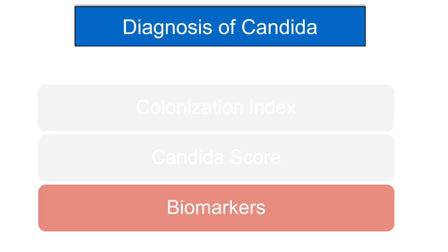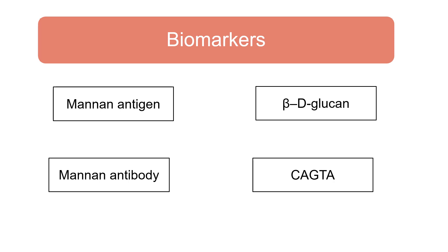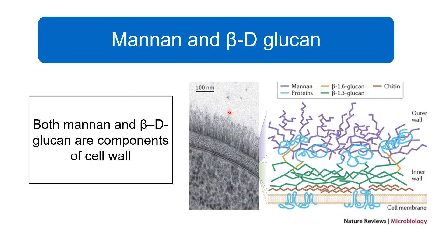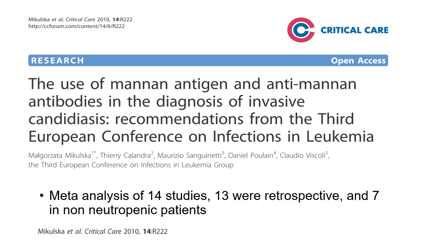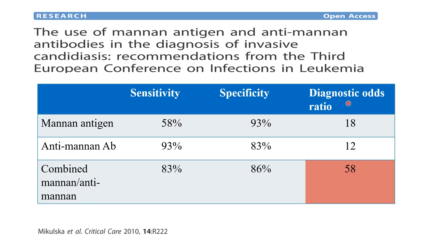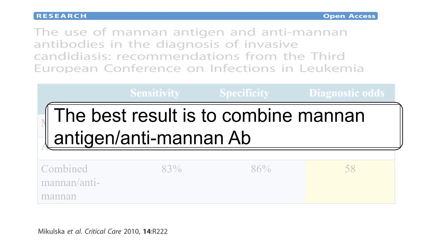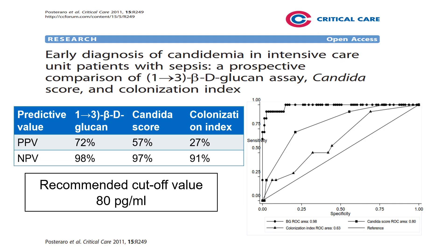Biomarkers include mannan antigen, mannan antibody, beta-D-glucan, and the Candida albicans germ tube antibody (CAGTA). Both mannan and beta-D-glucan are components of the Candida cell wall. A meta-analysis showed the diagnostic odds ratio for mannan antigen alone is 18, for anti-mannan antibody alone is 12, but combining both increases the diagnostic odds ratio to 58. For beta-D-glucan, the best cutoff value is 80 picograms per milliliter, which has positive and negative predictive values higher than the Candida score and colonization index.